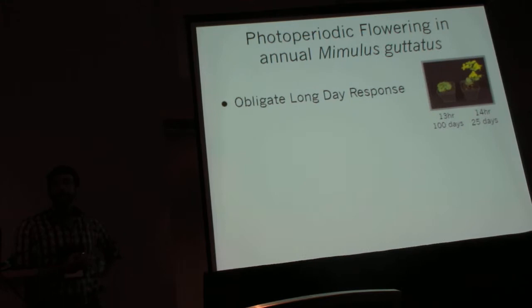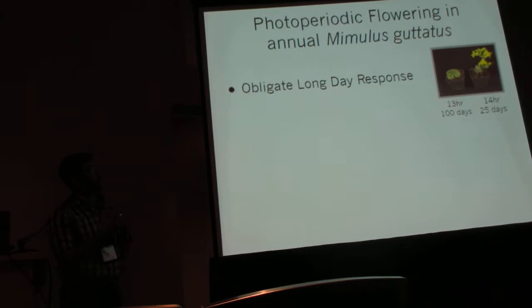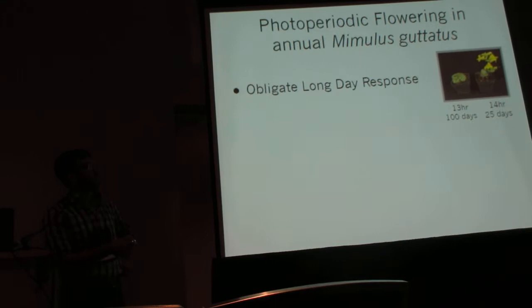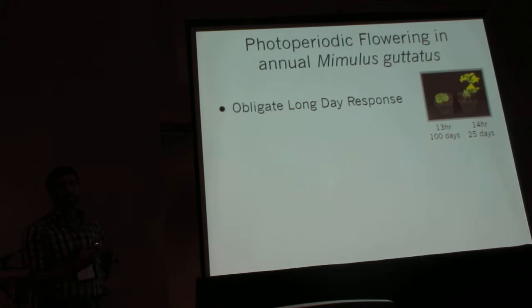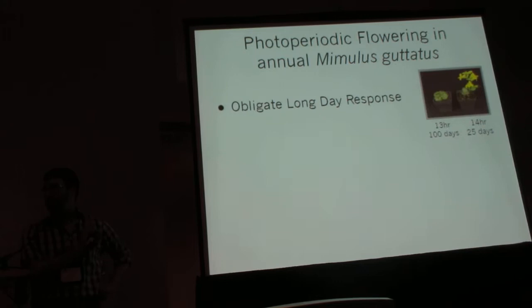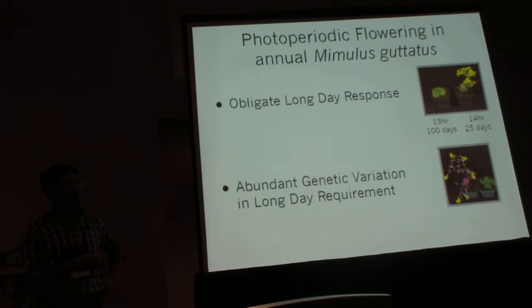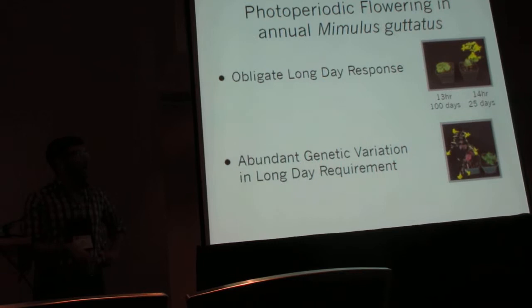To begin to address these questions about the genetic architecture of threshold trait evolution, I've been working in the common monkey flower, Mimulus guttatus, specifically on annual populations of this species. These populations have an obligate long-day response: they will only flower when the day length exceeds some critical minimum. Below that threshold they stay as little cabbages forever, and above that threshold they flower rapidly. Previous work in the lab had shown variation among populations in that threshold parameter, possibly correlated with geography.